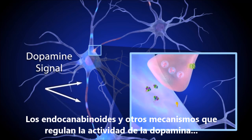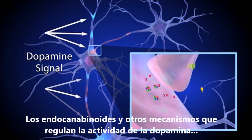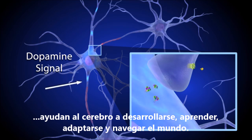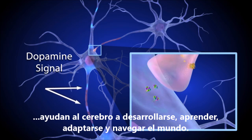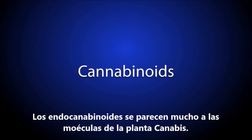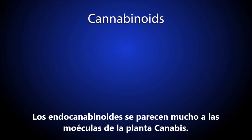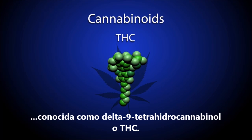Endocannabinoid and other mechanisms that regulate dopamine activity help the brain develop, learn, adapt, and navigate a complex world. Endocannabinoids are molecules that closely resemble the main chemical in the cannabis plant, delta-9-tetrahydrocannabinol or THC.